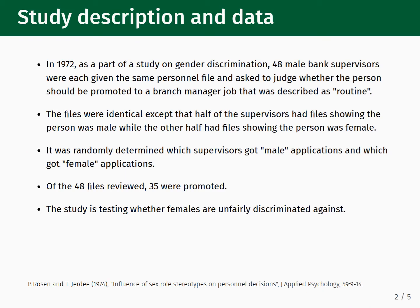The case study we will consider was conducted in 1972 as part of a study on gender discrimination. 48 male bank supervisors were each given the same personnel file and asked to judge whether the person should be promoted to a branch manager job that was described as routine. The personnel files were all identical, save for one detail: half presented the person as male, and the other half presented the person as female. It was randomly determined which supervisors would get the male applications and which ones would get the female applications.